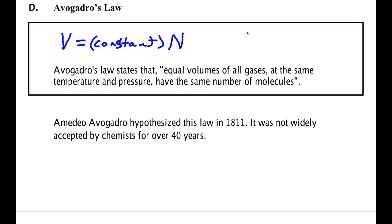Avogadro's law says the volume of a gas is equal to some constant times the particle number N. Or again, sometimes it's written as V1 over N1 equals V2 over N2. Equal volumes of gas at the same temperature and pressure have the same number of molecules or equivalently have the same number of moles.